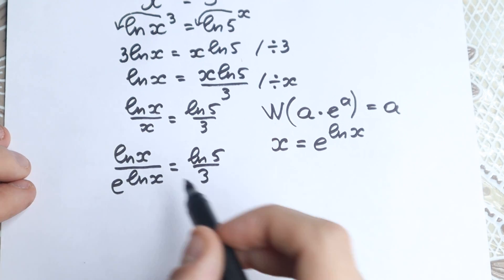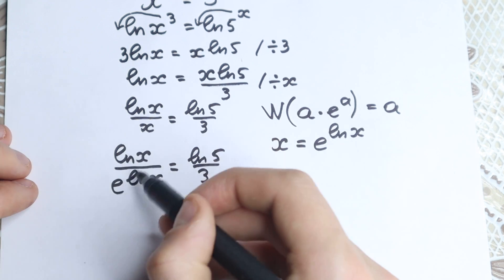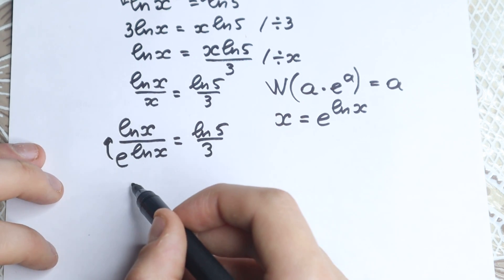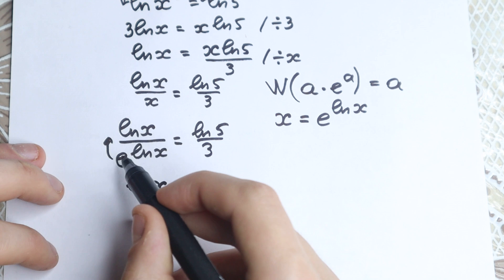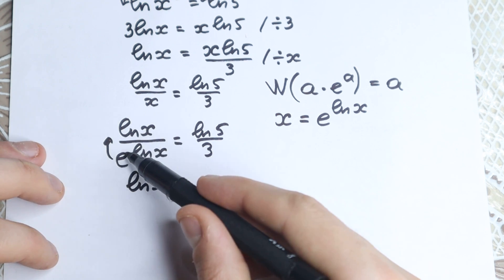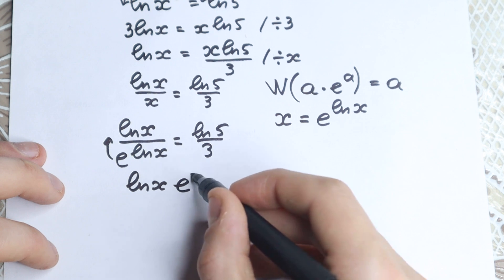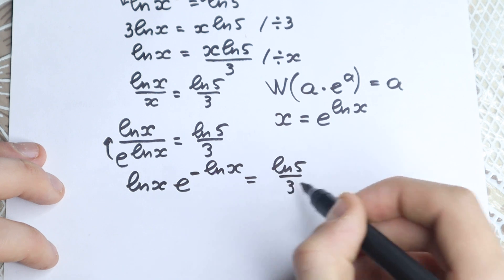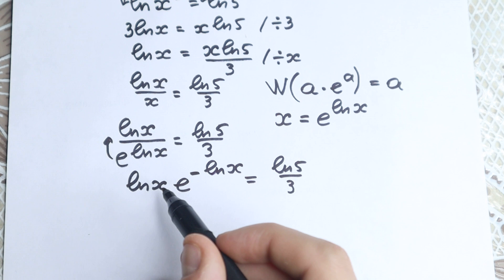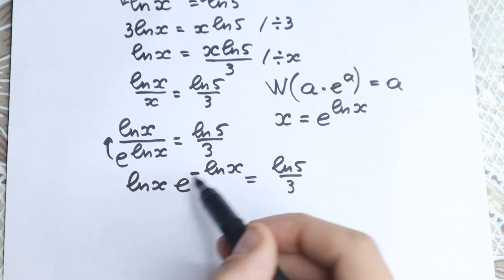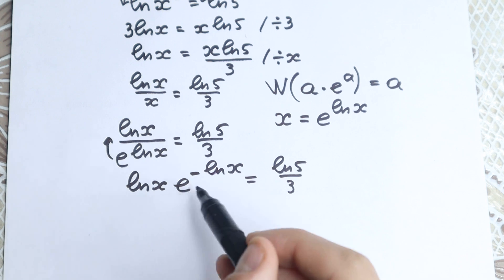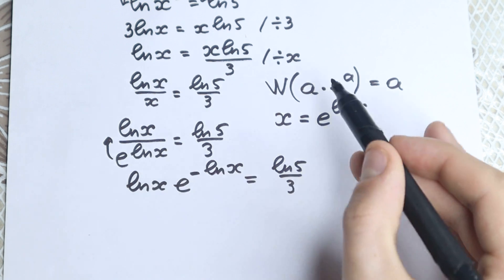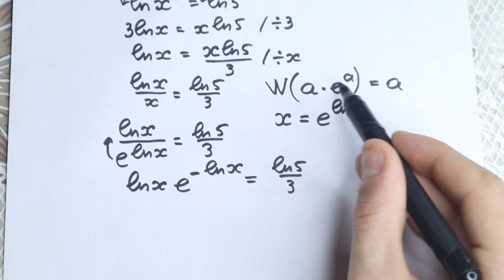What are we going to do next? We have a fraction in the denominator. Let's bring this expression from the denominator to the numerator. As a result, we have ln(x) times e to the power of minus ln(x), equal to ln(5)/3. Now looking closely at this expression, we have ln(x) multiplied by e to the power of minus ln(x). It looks similar to our Lambert W form, but we have minus ln(x) in the exponent — not the same as ln(x). We need to have the same expression a on both sides.